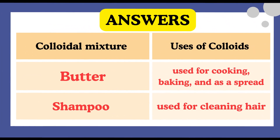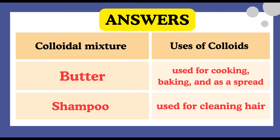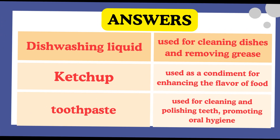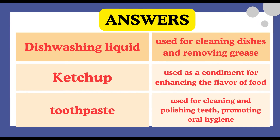Here's the list of colloids from the given items along with their uses. Butter — used for cooking, baking, and as a spread. Shampoo — used for cleaning hair. Dishwashing liquid — used for cleaning dishes and removing grease. Ketchup — used as a condiment for enhancing the flavor of food. Toothpaste — used for cleaning and polishing teeth, promoting oral hygiene.